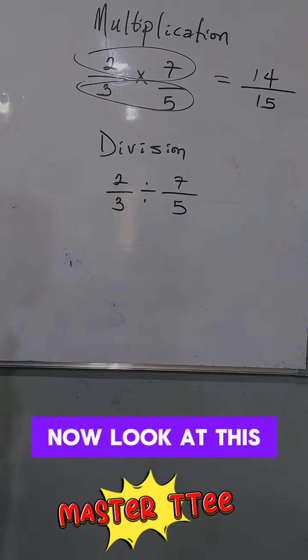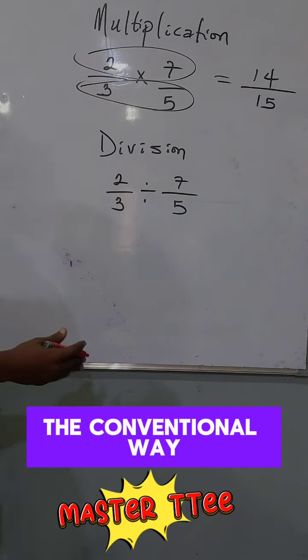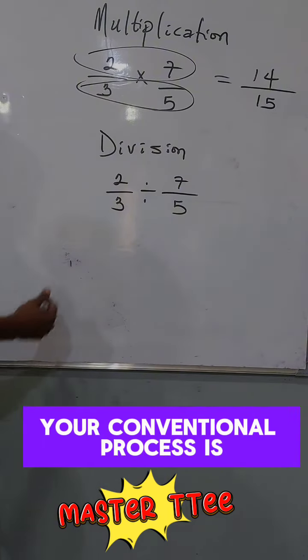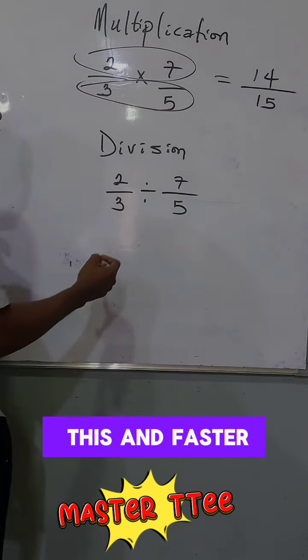Good. Now look at this division. There is a conventional way. The unconventional process is this and faster.